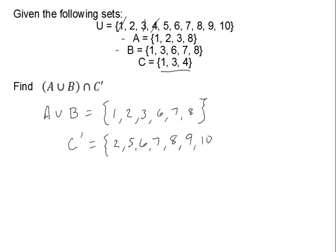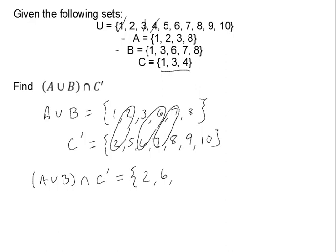My problem now is to take A union B and intersect that with the complement of C. Remember the intersection is what is common to both sets. So looking for what's common I have the number 2 in common, I have 6 in common, we have 7 in common, and then finally we have 8 in common. And so that is the answer to the problem.